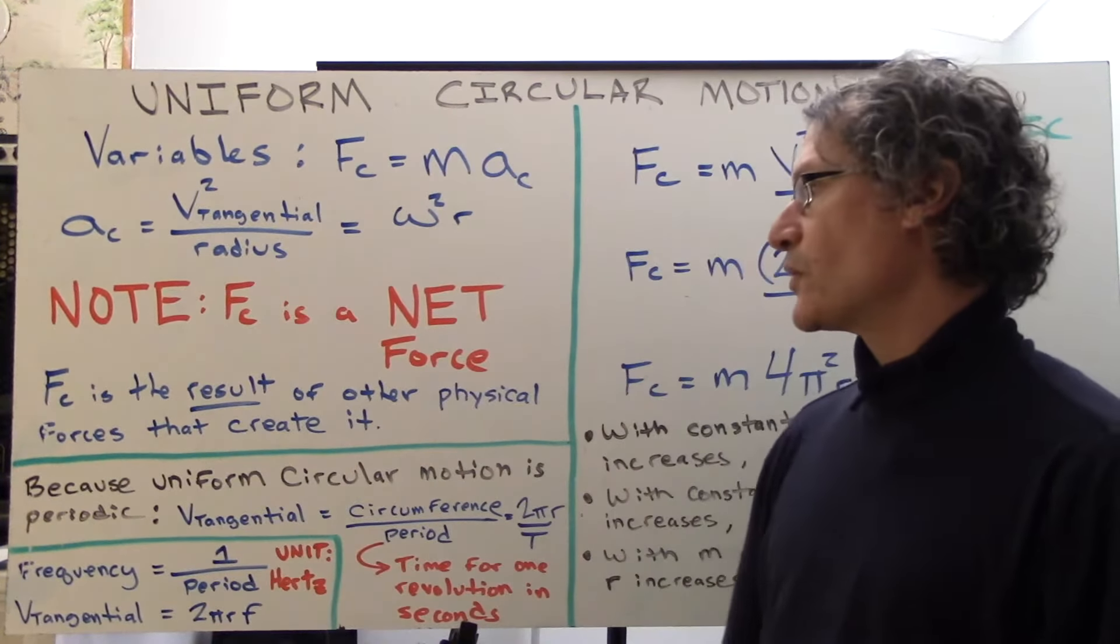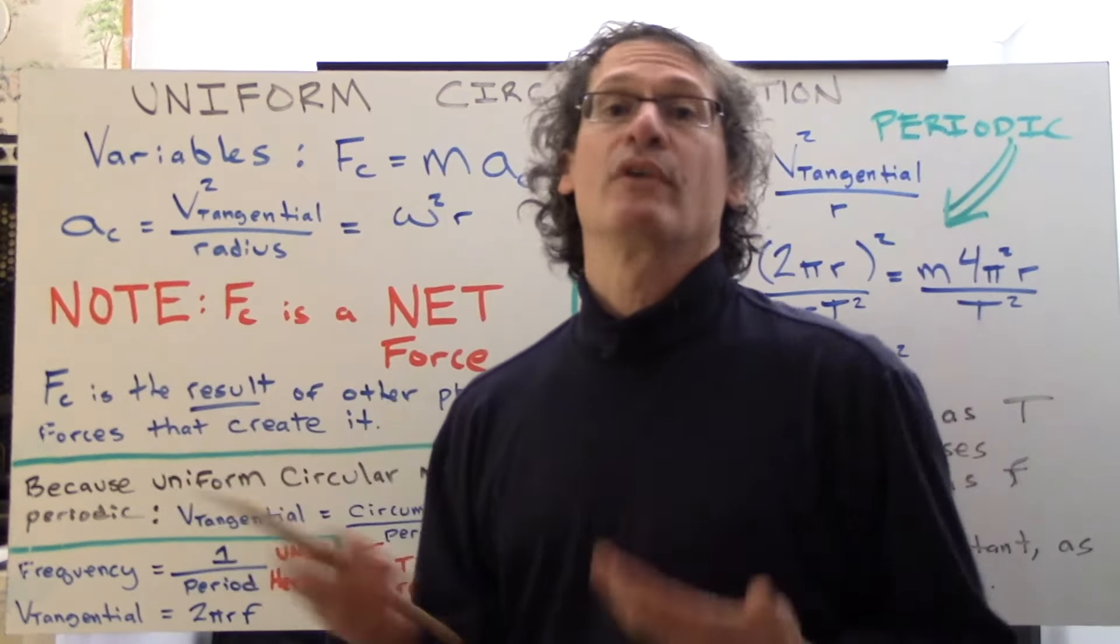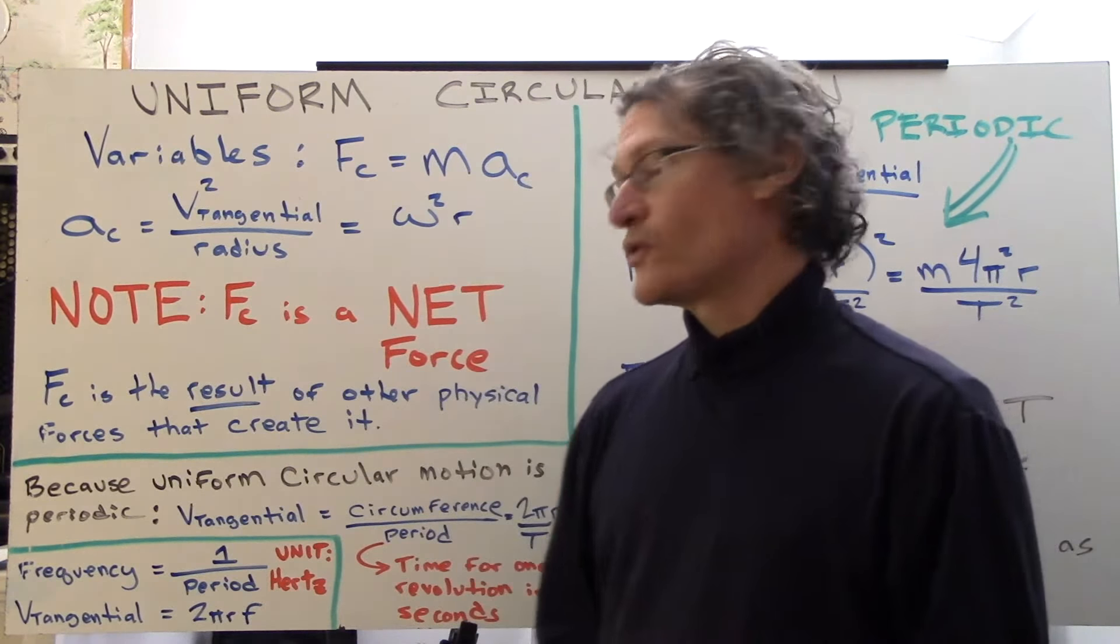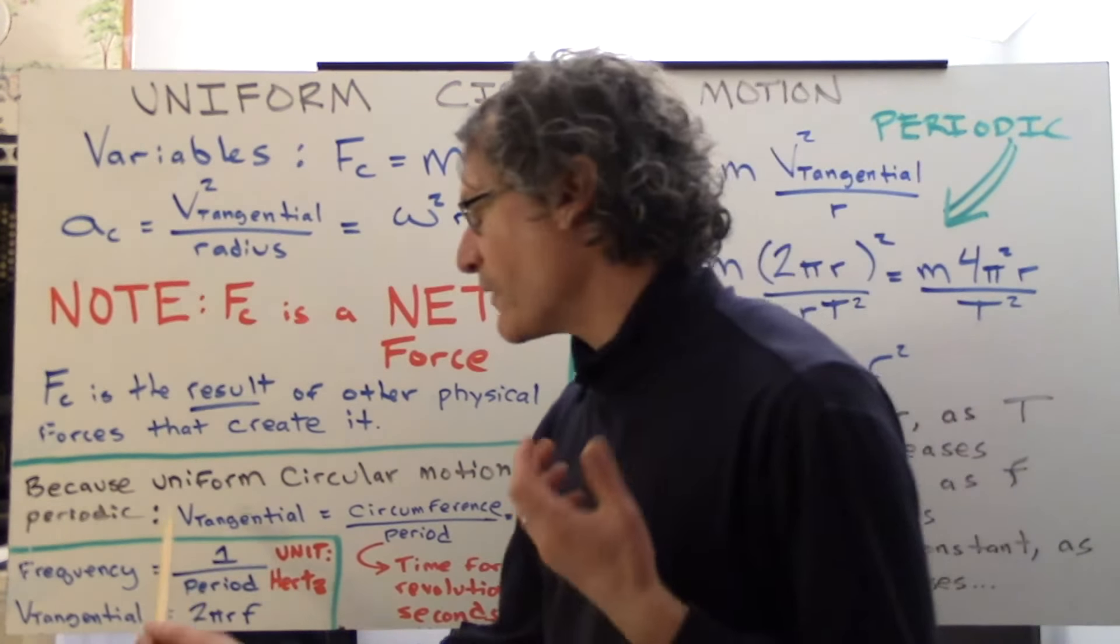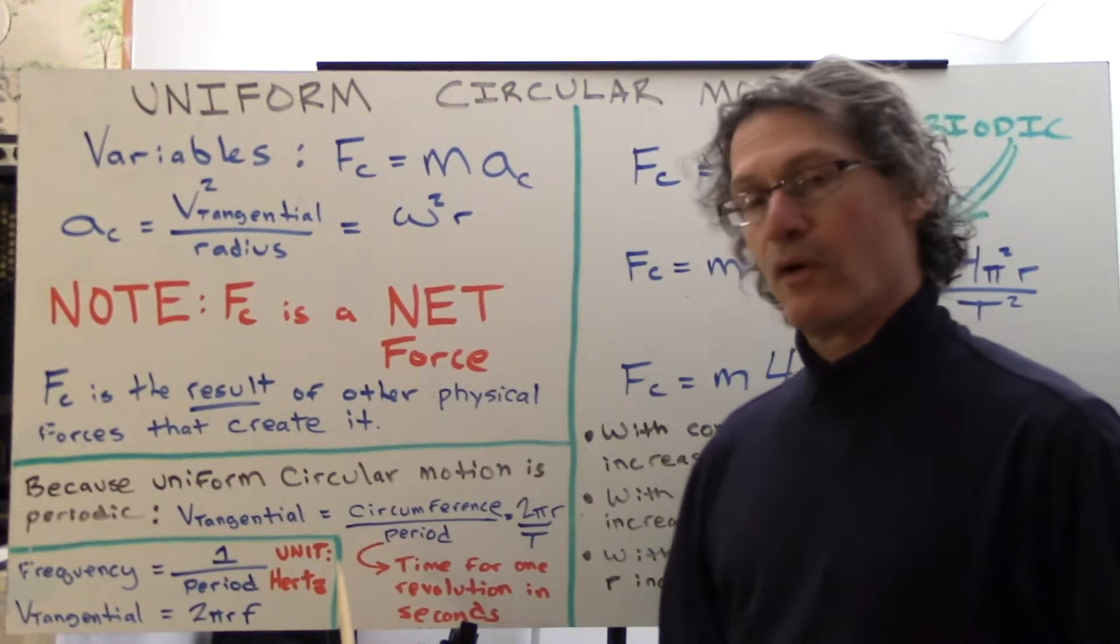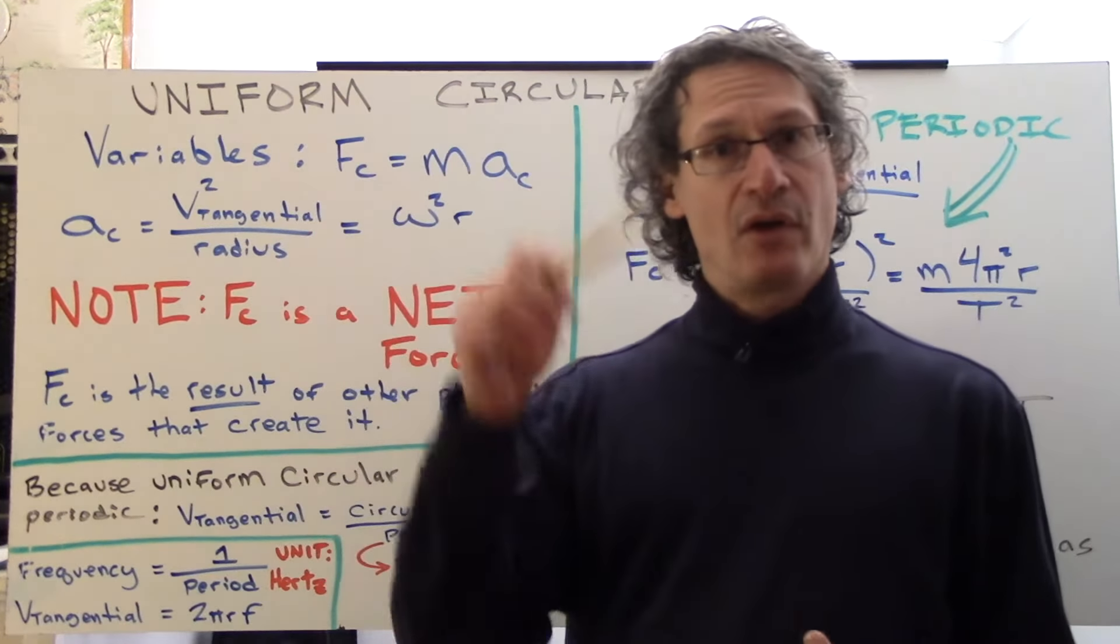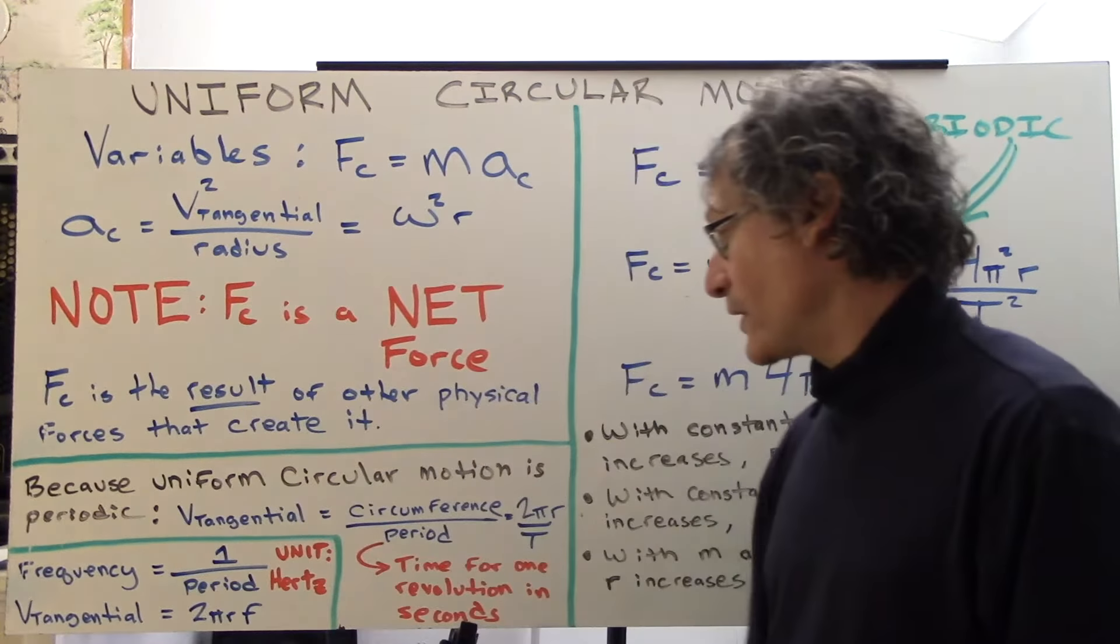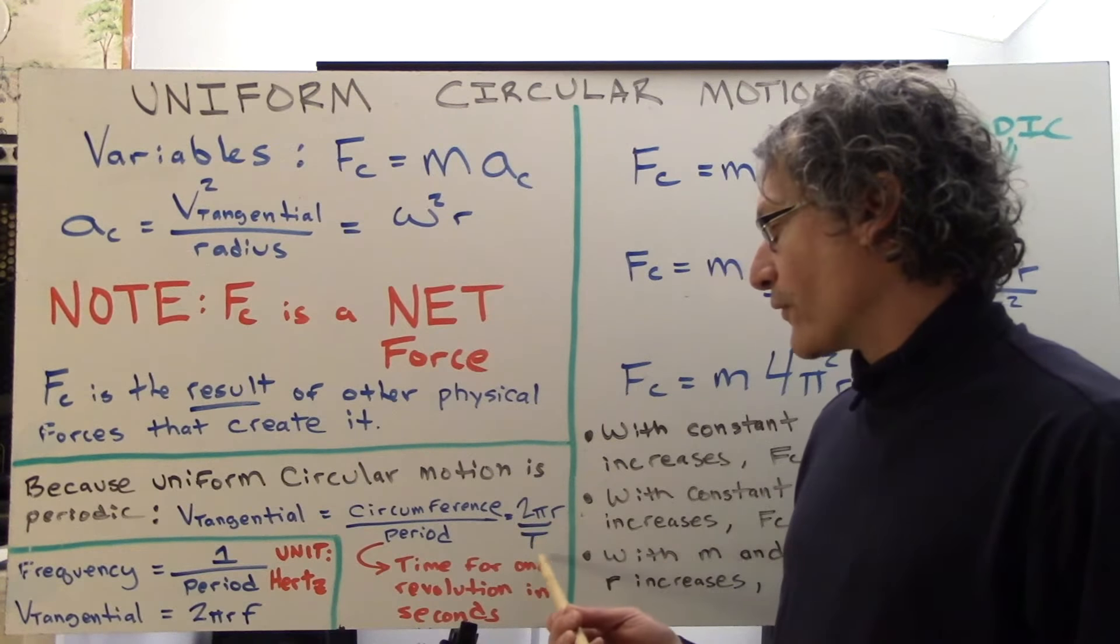Because uniform circular motion is periodic, meaning that, once again, a revolution will occur at a consistent interval of time, so the time that it takes to create one revolution around is the same. So when that is true, we get this, that v tangential is equal to the circumference over the period. So circumference is the distance of one revolution around over the period, which is the time it takes to complete one revolution. So what we have here is 2πr over the period T.